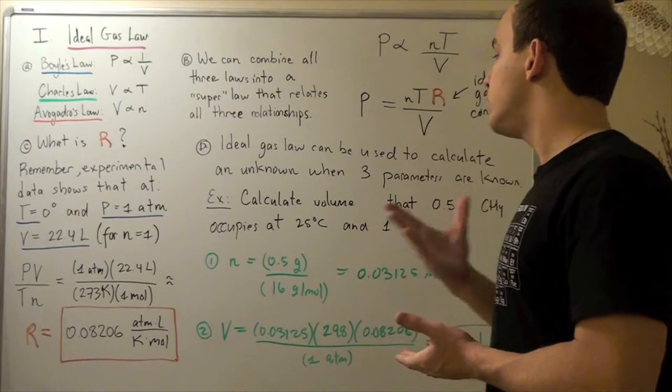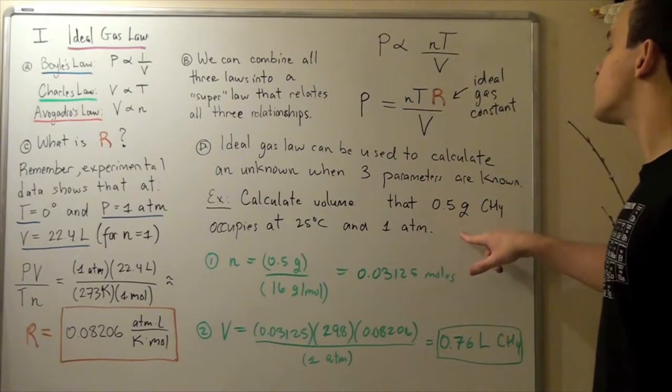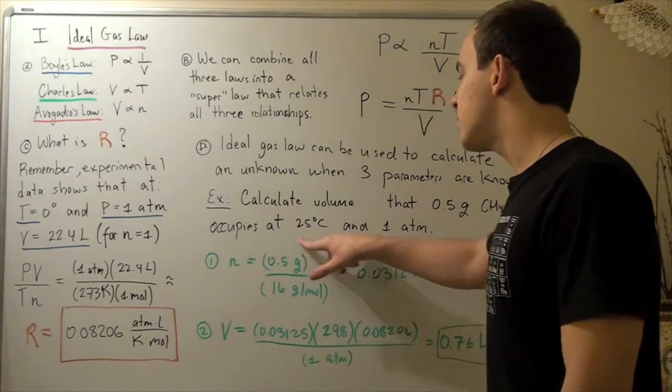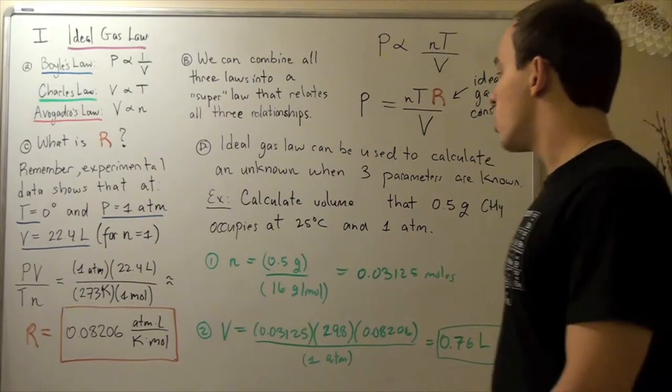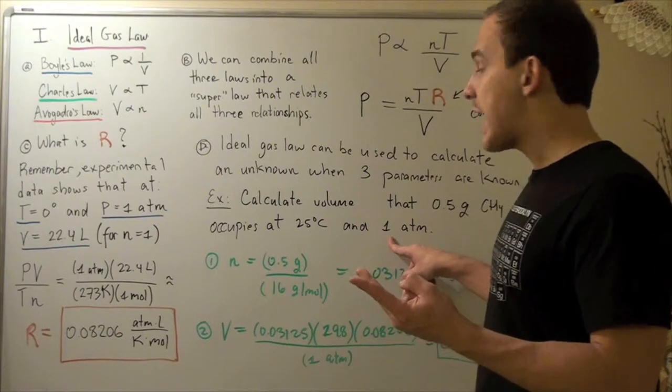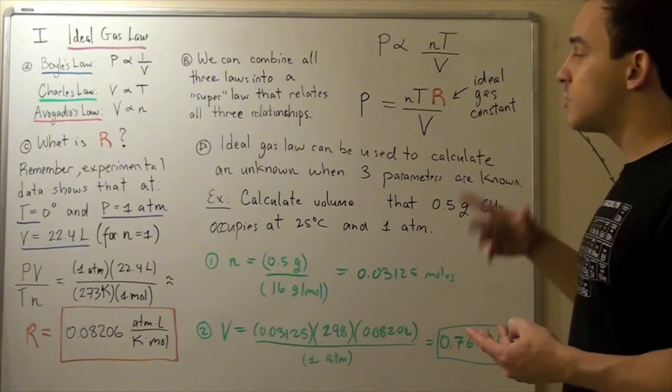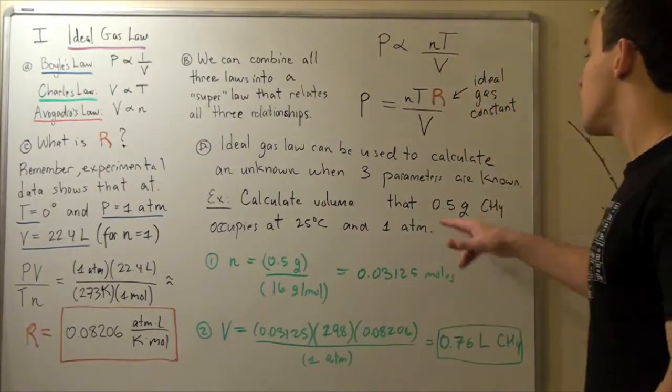Our example states that we want to calculate volume that 0.5 grams of methane occupies at 25 degrees Celsius and 1 atmospheric pressure. So we have one known, we have two knowns, our pressure, we have three knowns, grams, because remember, grams will translate into moles. We can find moles using grams.